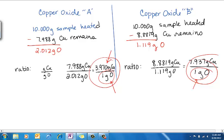The masses that combine with that fixed mass are in a ratio of small whole numbers. So what that means is, here's the masses that combine with the fixed mass. So if I take, basically, the ratio of the masses of copper to 1 gram of oxygen,